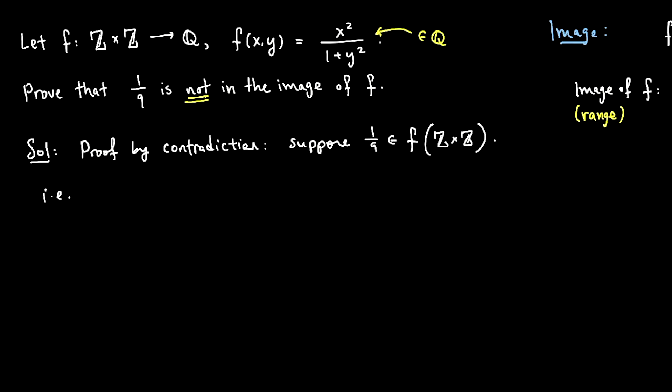What that means is by definition of image, it means 1 over 9 is produced by some input. Let's call that input, well we know f accepts a pair of integers as input, so why don't we call the input f of x, y. The input is x, y. For some pair of integers x comma y.